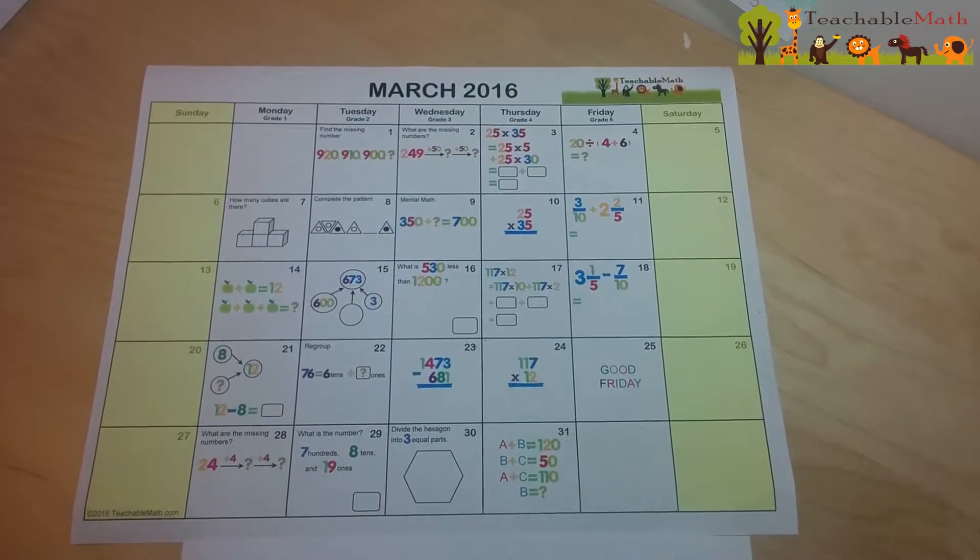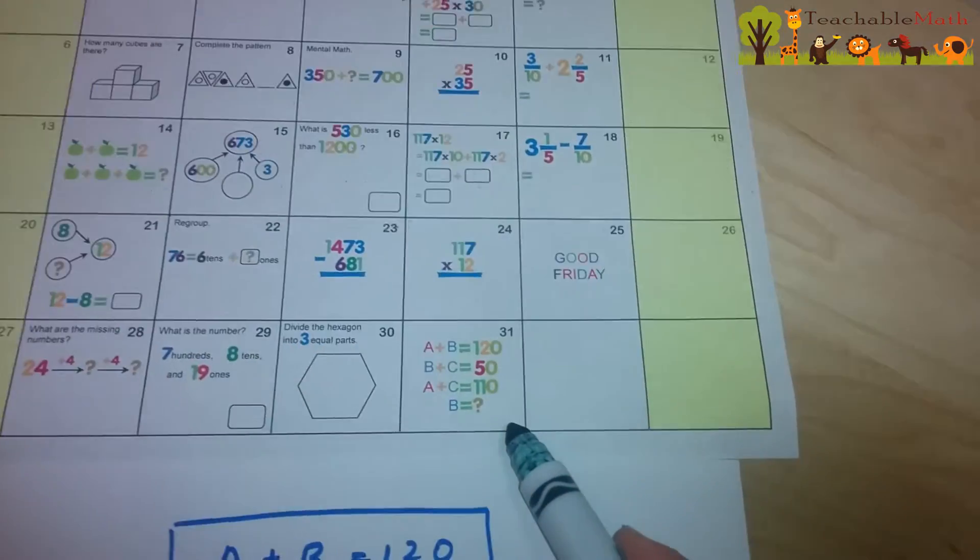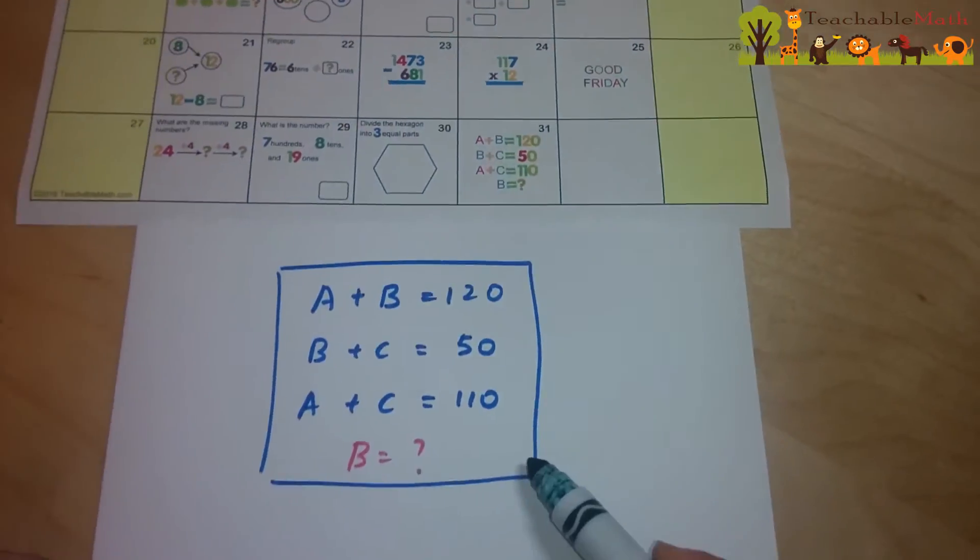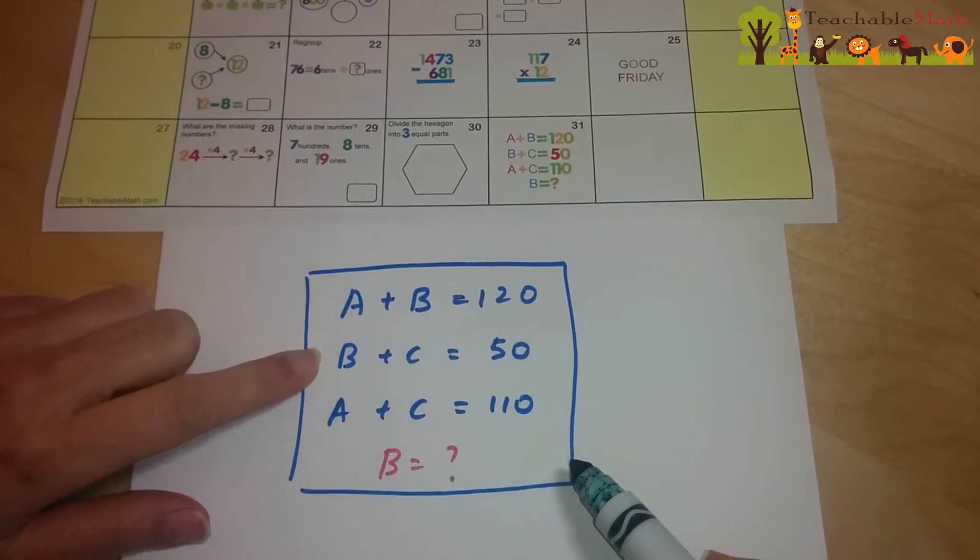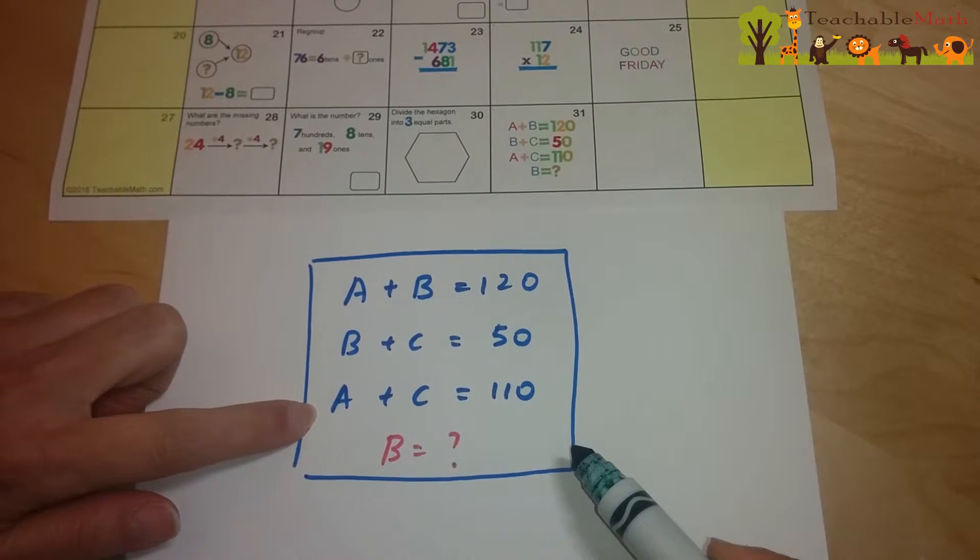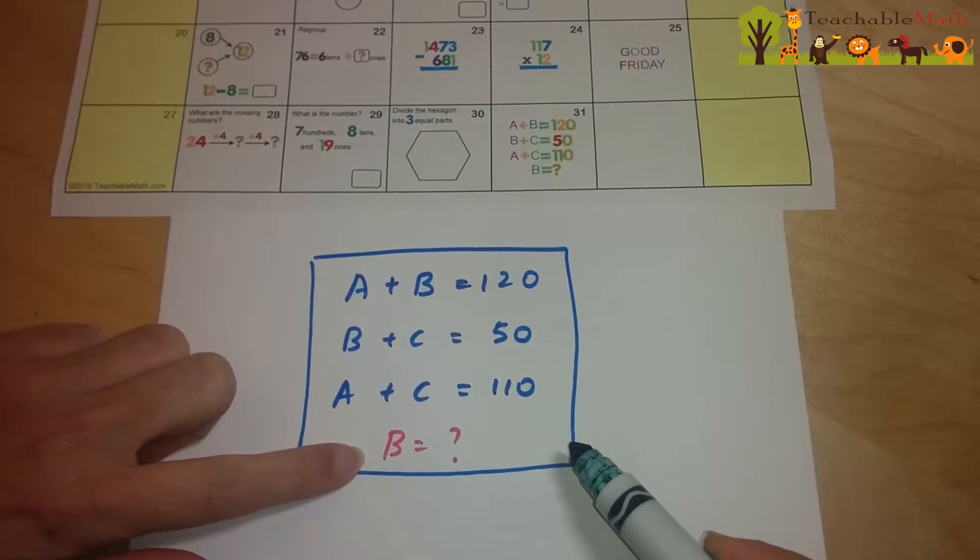This is a question from our March math calendar. A plus B equals 120, B plus C is 50, and A plus C is 110. So what is B?